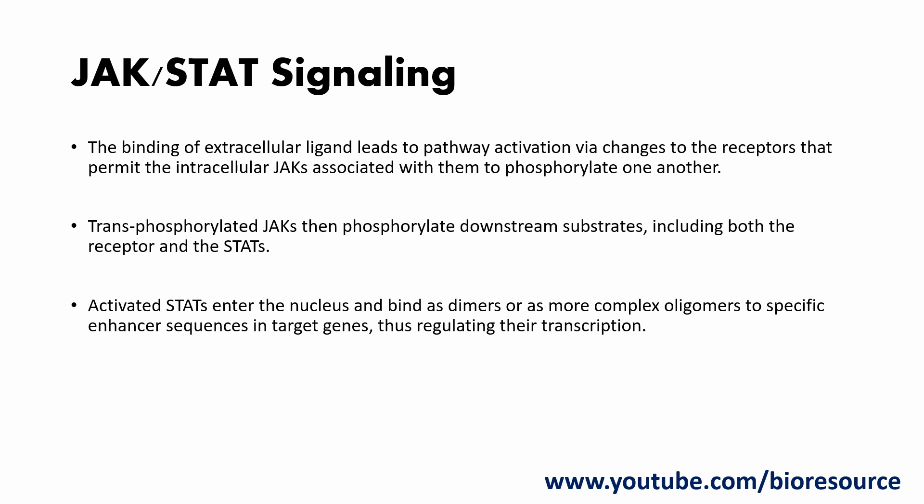The JAK-STAT signaling pathway follows these steps: the binding of an extracellular ligand leads to pathway activation via changes to the receptors that permit the intracellular JAKs associated with them to phosphorylate one another. The transphosphorylated JAKs then phosphorylate downstream substrates including both the receptor and STATs. The activated STATs enter the nucleus and bind as a dimer or more complex oligomers to specific enhancer sequences in the target genes, thereby regulating transcription of those genes.